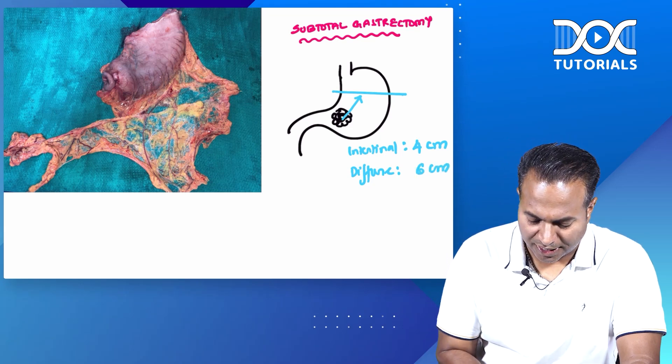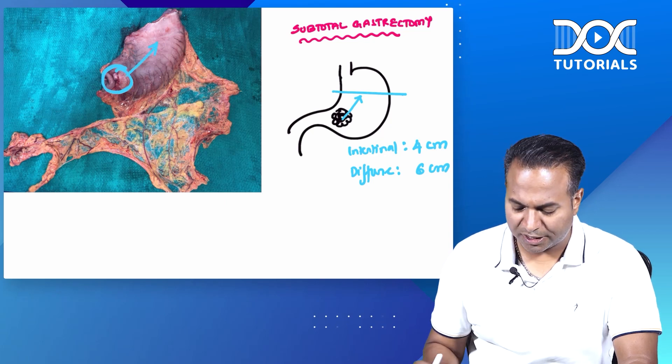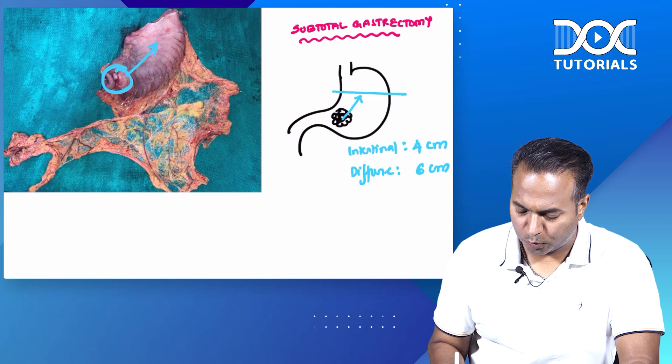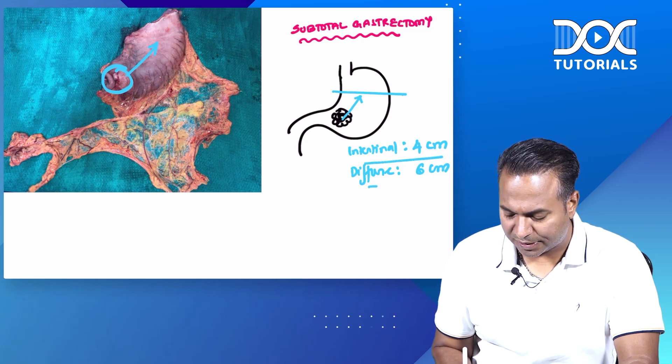You can see there is a cancer here. We have given more than a 4 cm margin in this specimen. So this is a specimen of subtotal gastrectomy: 4 cm proximally in intestinal type and 6 cm in diffuse type.